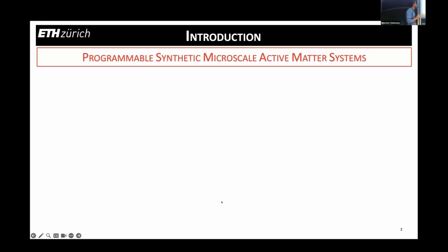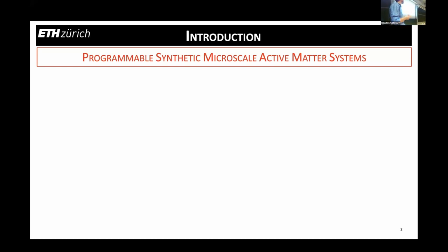To this audience I don't really need to introduce active matter. Very briefly, what I would consider a distilled definition: active matter systems are systems that are able to intake energy — available either as a chemical fuel or harvested from external fields — and transform this energy primarily into directed motion and then into a range of different functionalities.